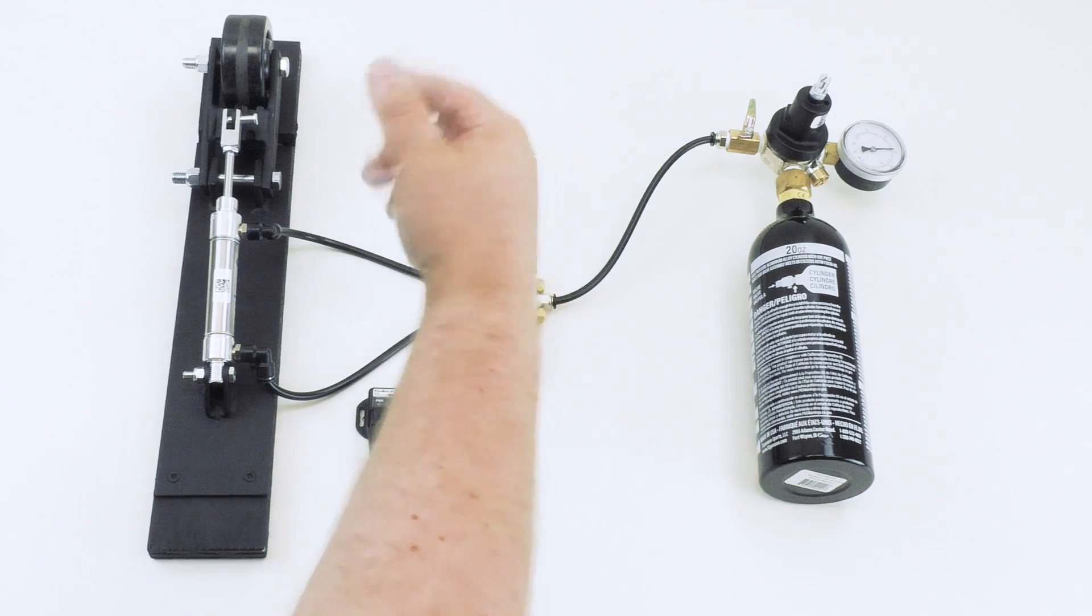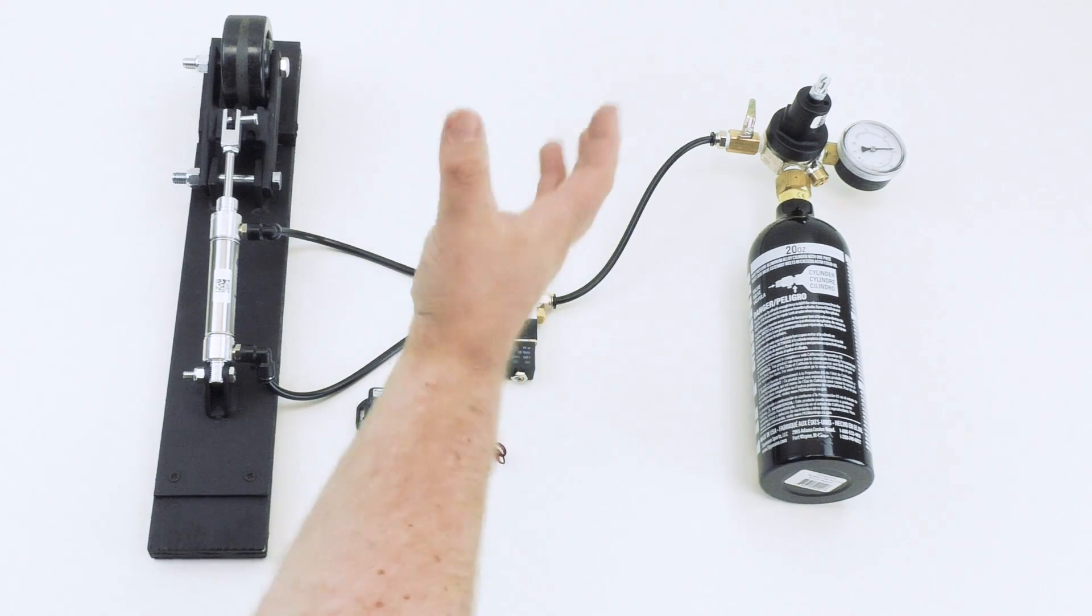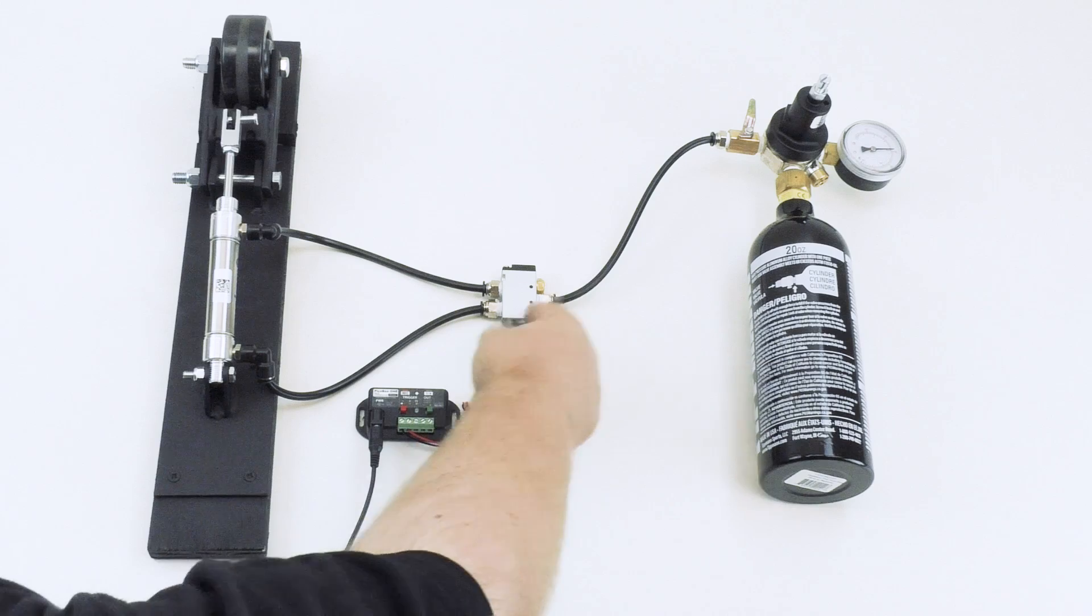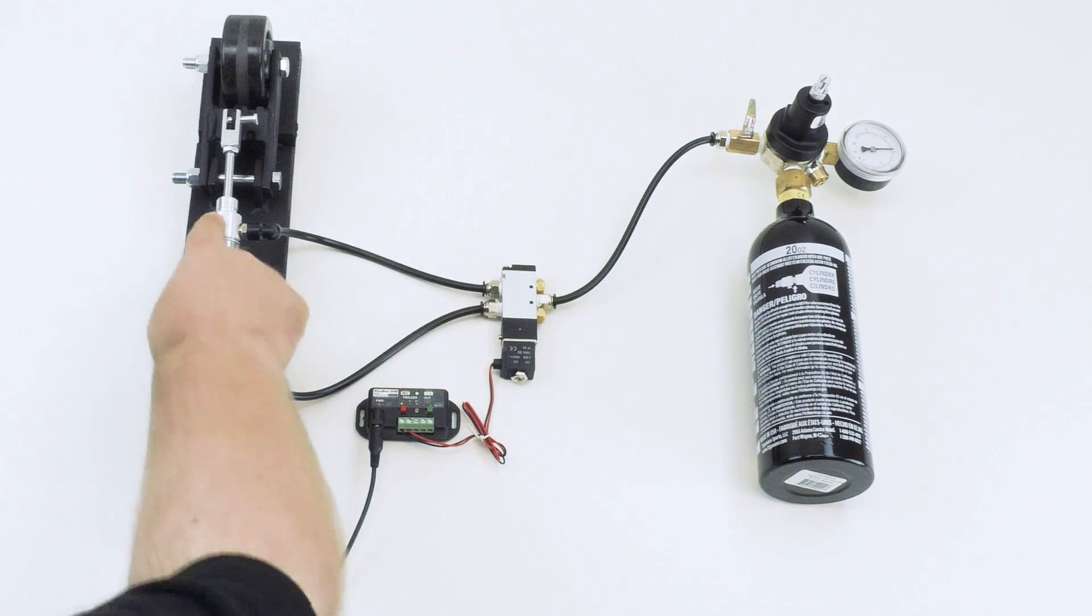An air compressor is essentially a tank with a motor on it which pressurizes air, stores it in the tank, and then the solenoid here controls that flow of air to a cylinder like this one.